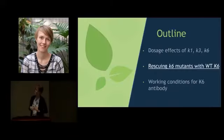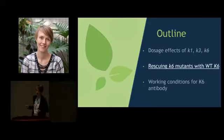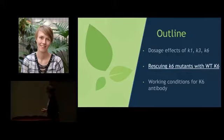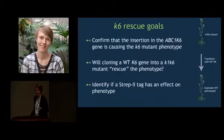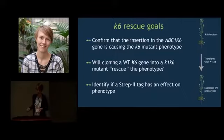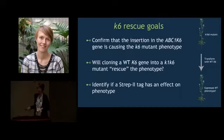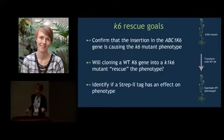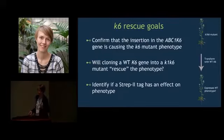While the first project focuses on studying the phenotypes that result from non-functional ABC1K, my second project approaches the task of determining ABC1K function from a molecular standpoint. It has not yet been confirmed that the insertion in the K6 gene is what causes the mutant K6 phenotype. So I set out to test this by cloning a wild-type copy of the K6 gene into a K1K6 mutant in an attempt to rescue the phenotype. I also added a C-terminal strep tag to the K6 gene to test if that has an effect on the phenotype.